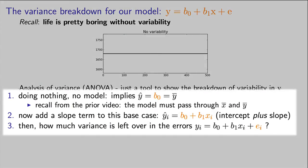We're going to start off with a horizontal line. Then we're going to ask, what is the change in adding a slope? And then we're going to estimate how much variance is left over in the errors.